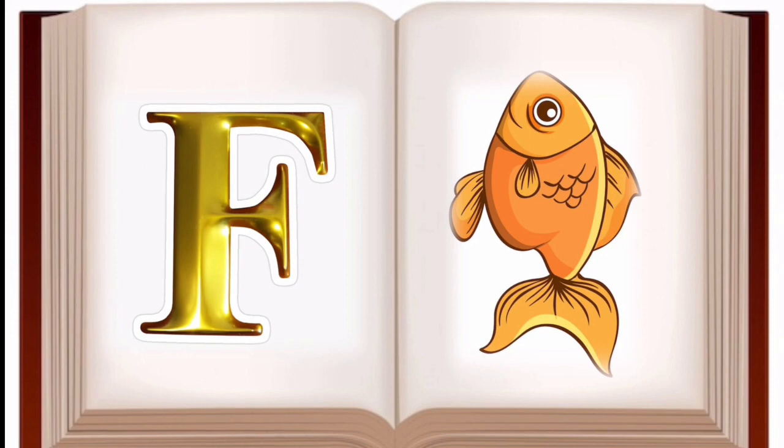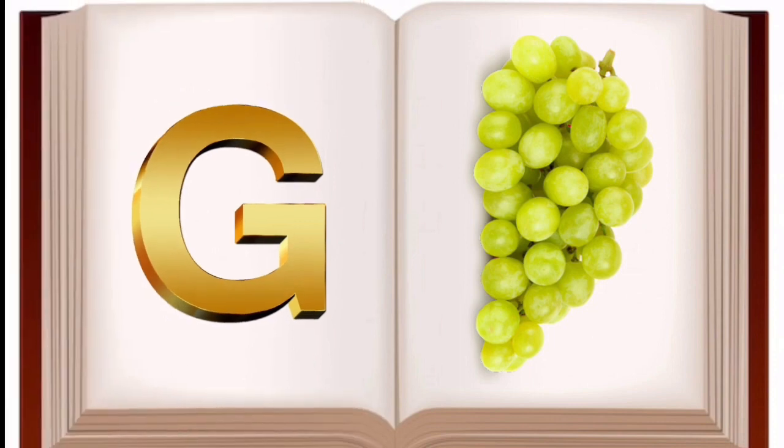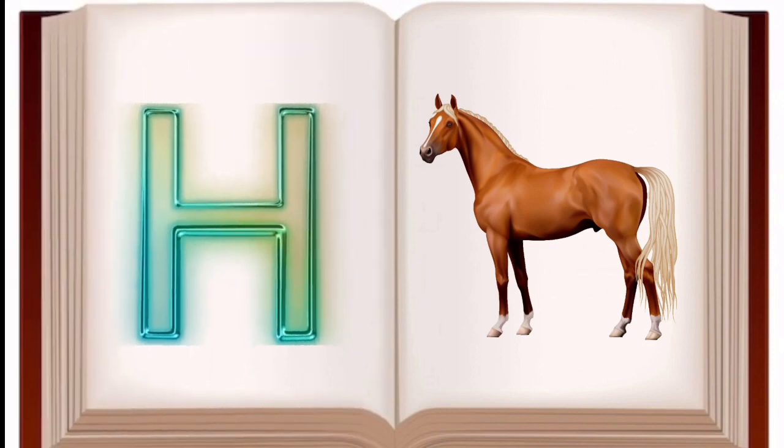F for fish, fish means machli. G for grapes, grapes means angoor. H for horse.